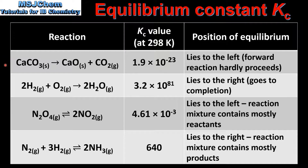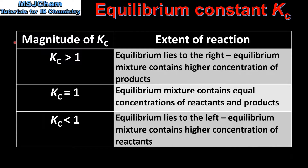Conversely, the smaller the value of Kc, the further to the left the position of the equilibrium lies. In this summary table we have the magnitude of the equilibrium constant Kc and the extent of reaction. If the Kc is greater than 1, the equilibrium lies to the right and the equilibrium mixture contains a higher concentration of products.